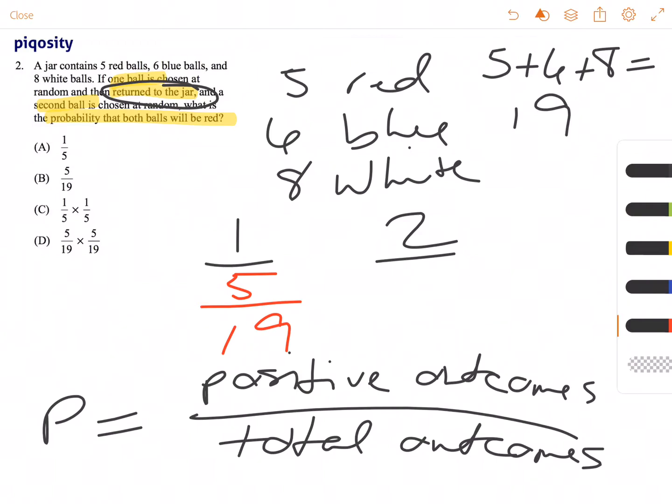There's not anything we can do to reduce that, so let's go ahead and think about the second event. We're drawing, or we want to draw another red, nothing changed from the number of balls in the jar because we put the first one back, so it should be the same probability for the second one.